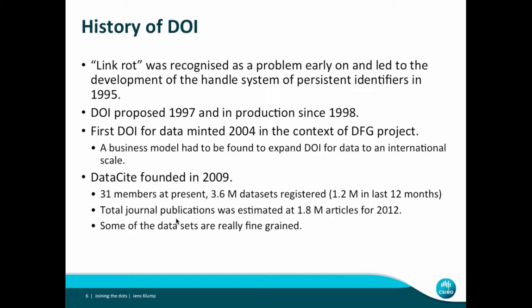The DOI was proposed in 1997 and went into production in 1998. This was also the first time somebody suggested that these new digital object identifiers could be useful for identifying data. That started a project in Germany, with the first DOI for data minted in 2004 — so we're at the 10-year anniversary — in the context of a project funded by the German Research Foundation. But to run this as a sustained service, a business model was needed to expand the use of DOIs to an international scale.